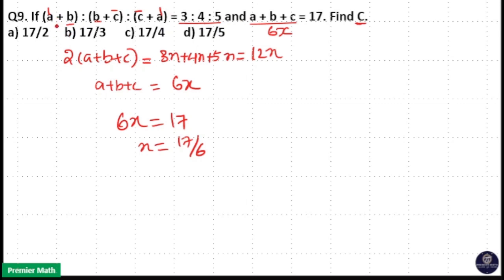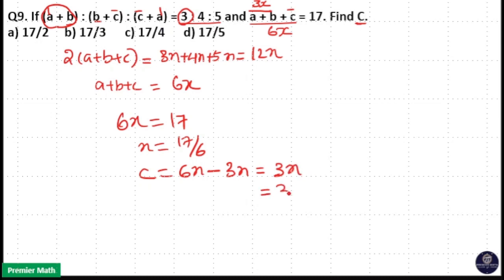Here, A+B = 3x, so C = 6x minus 3x = 3x = 3 × (17/6) = 17/2. That is your answer, option A: 17/2.